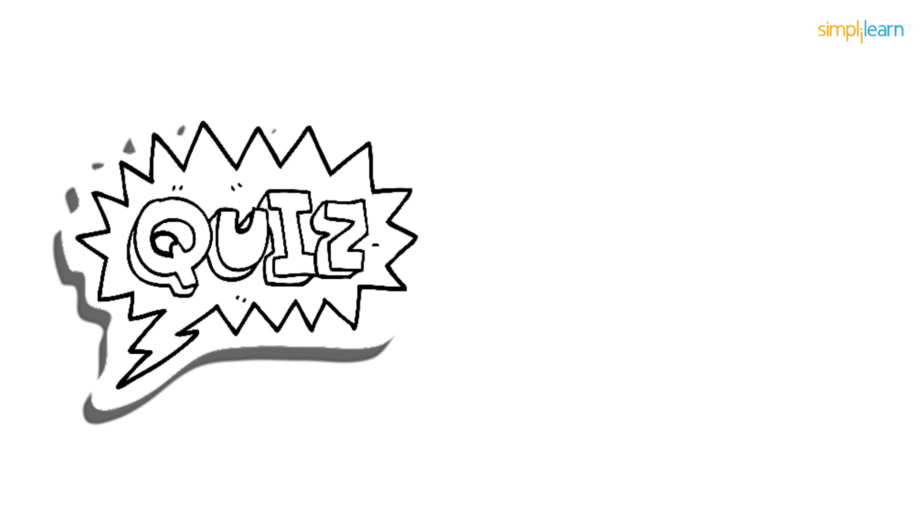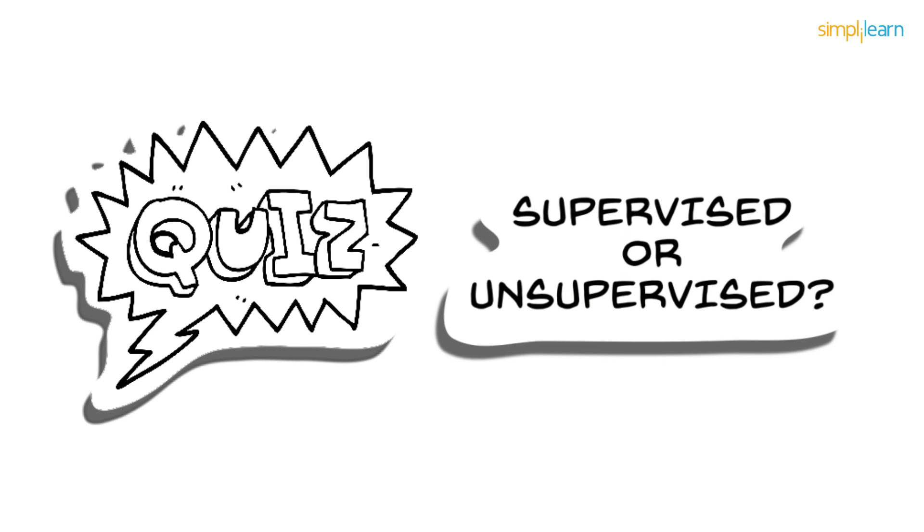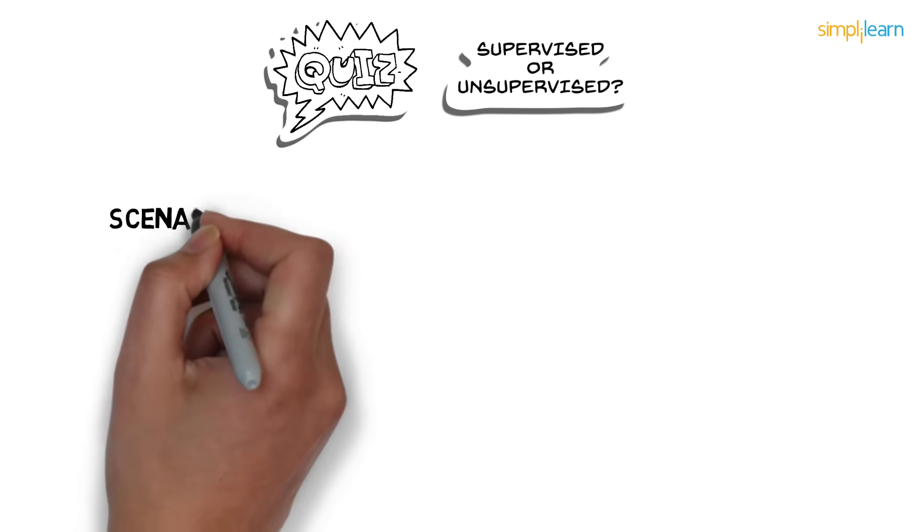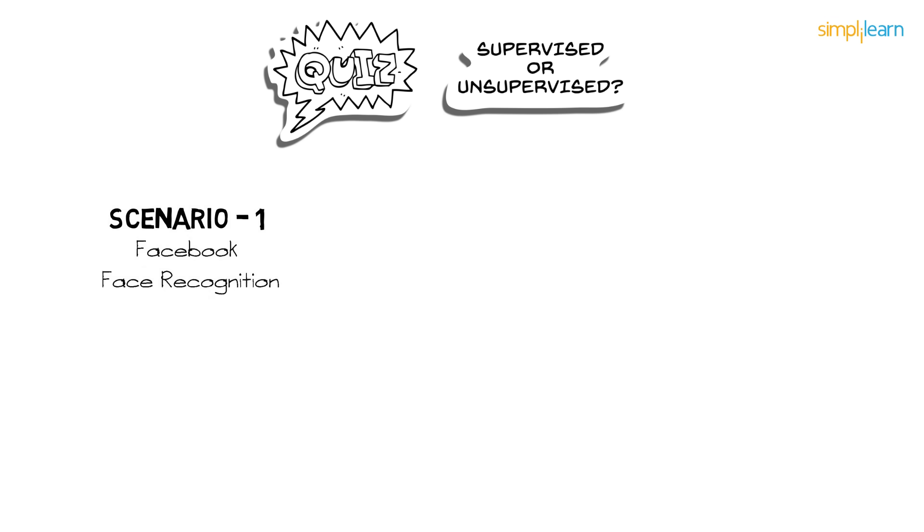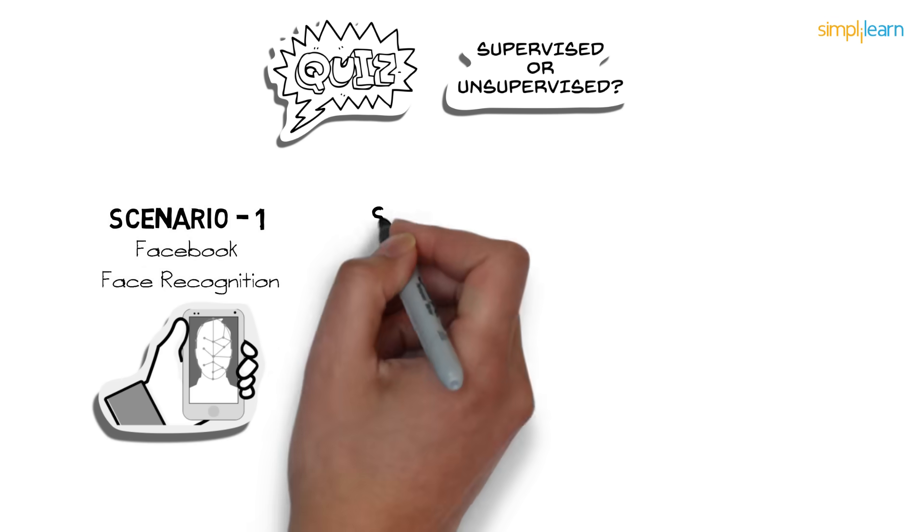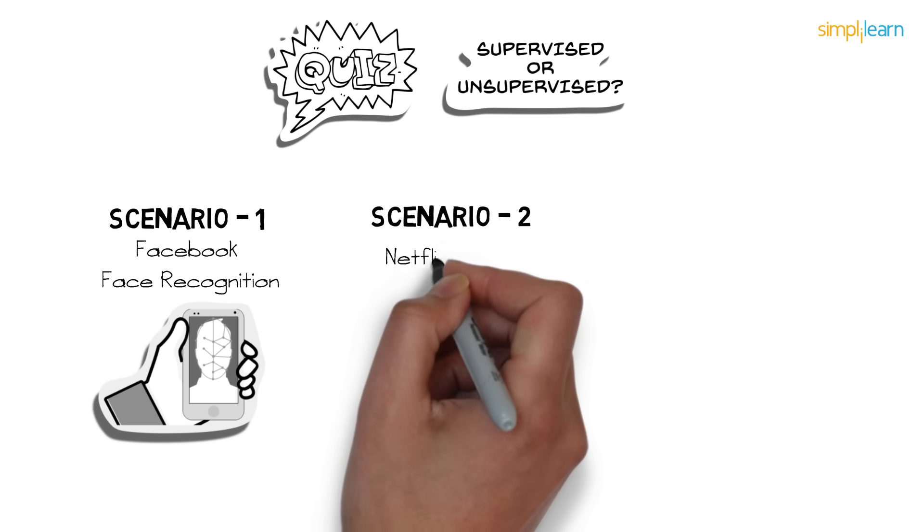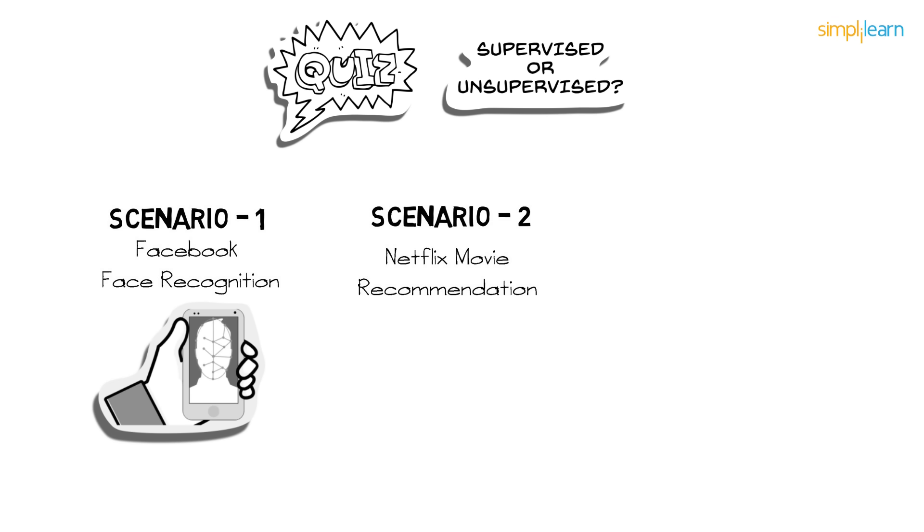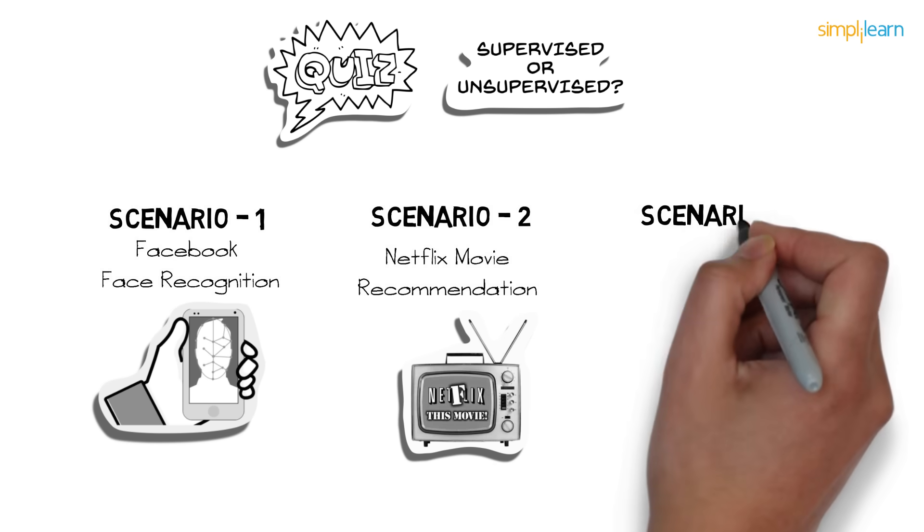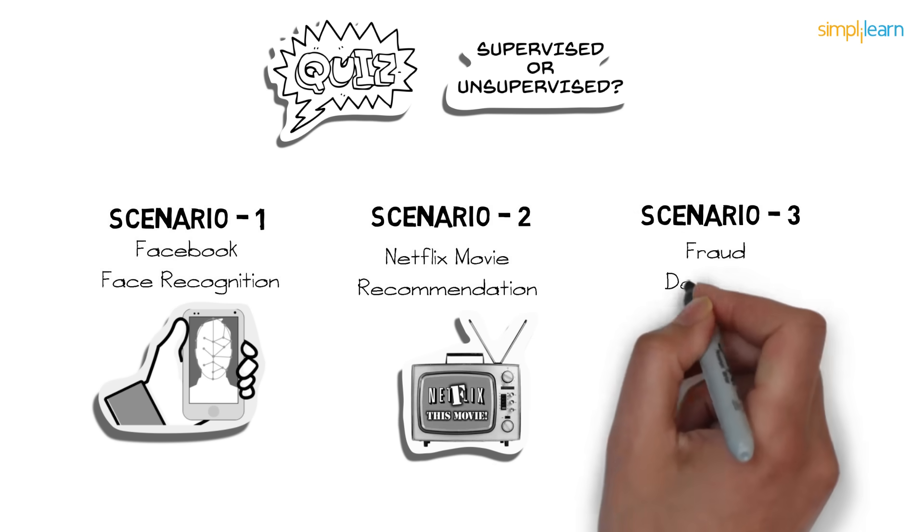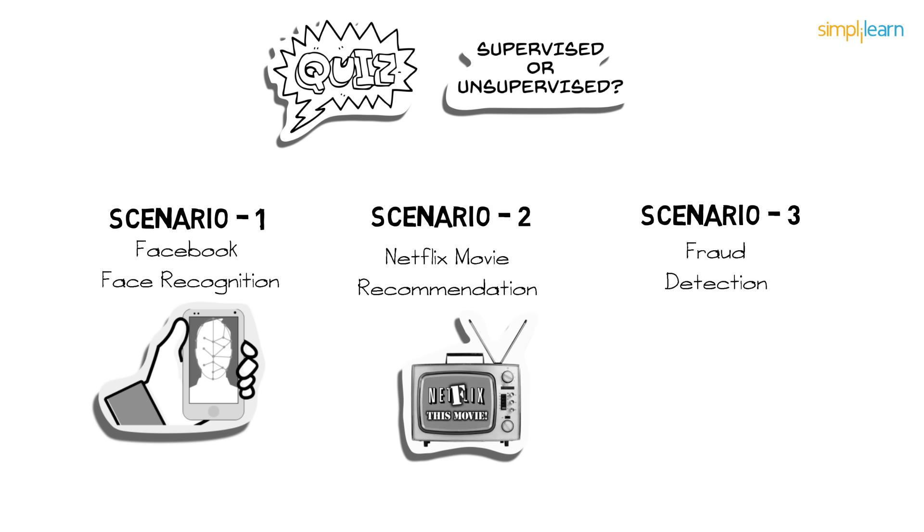So let's have a quick quiz. You have to determine whether the given scenarios uses supervised or unsupervised learning. Simple, right? Scenario 1: Facebook recognizes your friend in a picture from an album of tagged photographs. Scenario 2: Netflix recommends new movies based on someone's past movie choices. Scenario 3: Analyzing bank data for suspicious transactions and flagging the fraud transactions. Think wisely and comment below your answers.